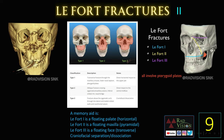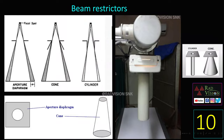The tenth case: you can see this is a beam restrictor — a cylinder and a cone. These are the different types of beam restrictors: aperture diaphragm, cone, and cylinder. Beam restrictors help in restricting the size and shape of the X-ray beam.